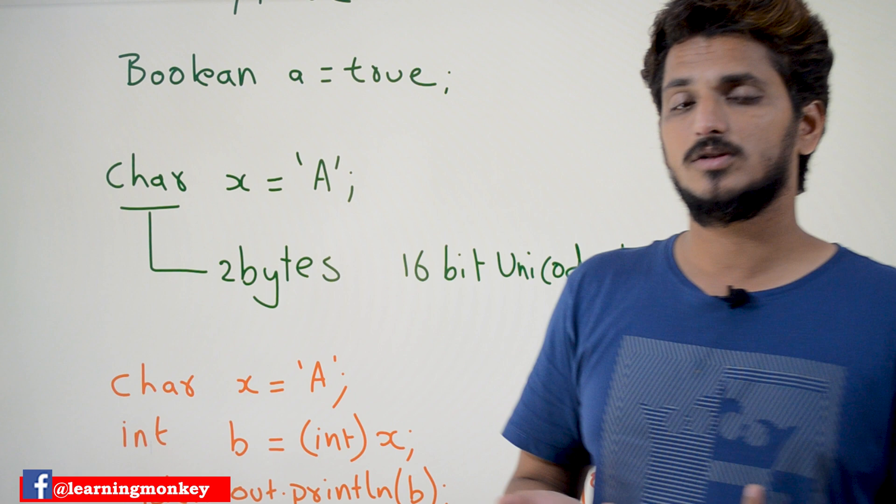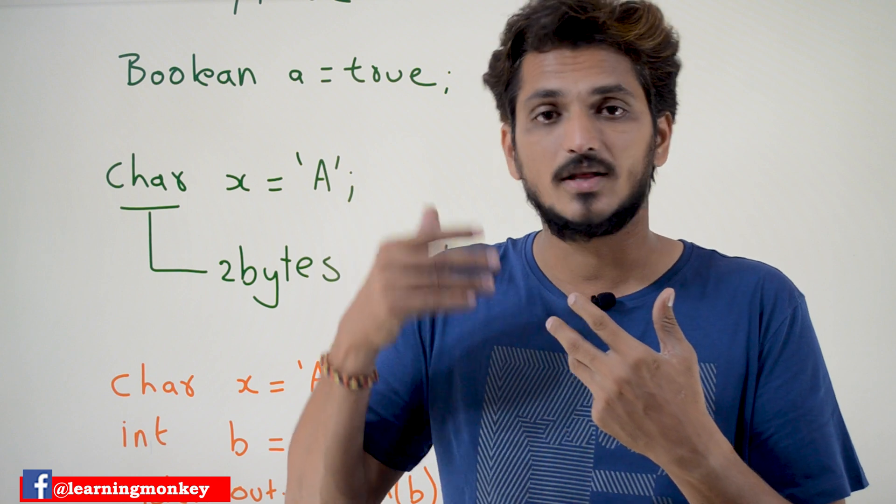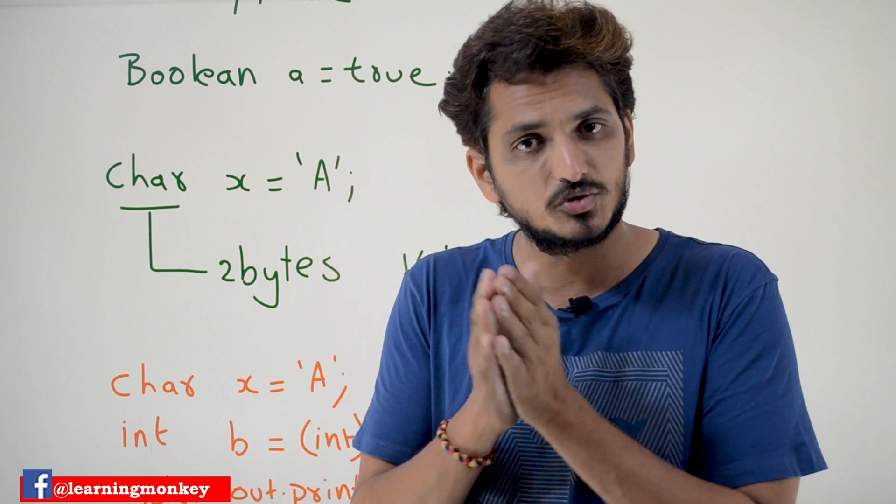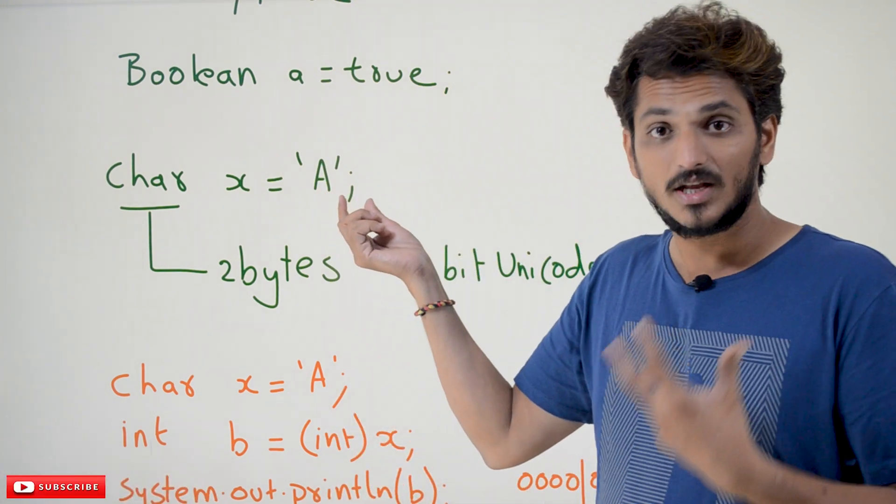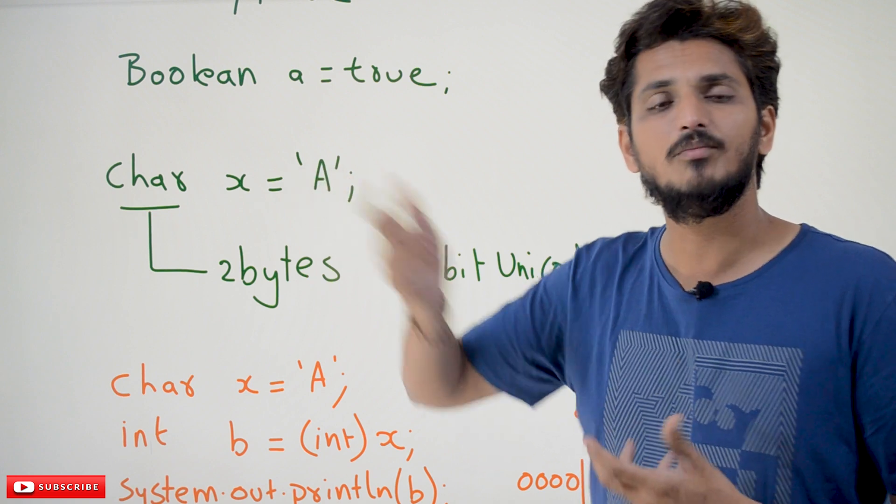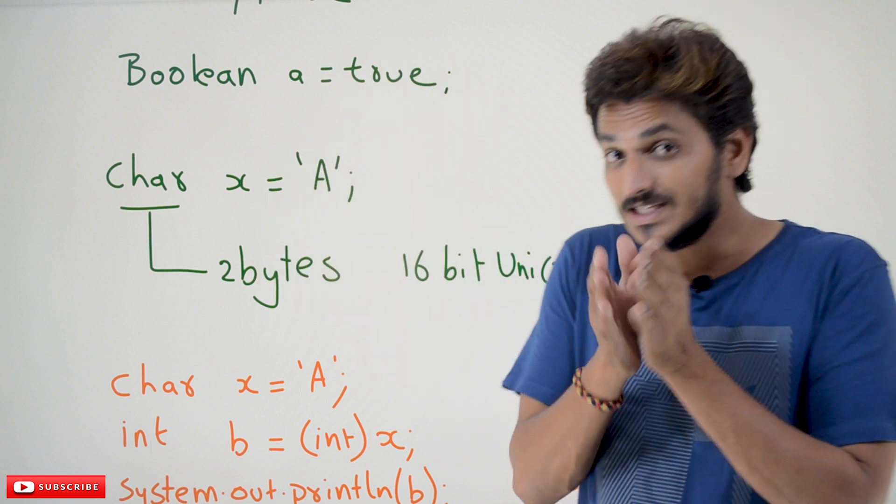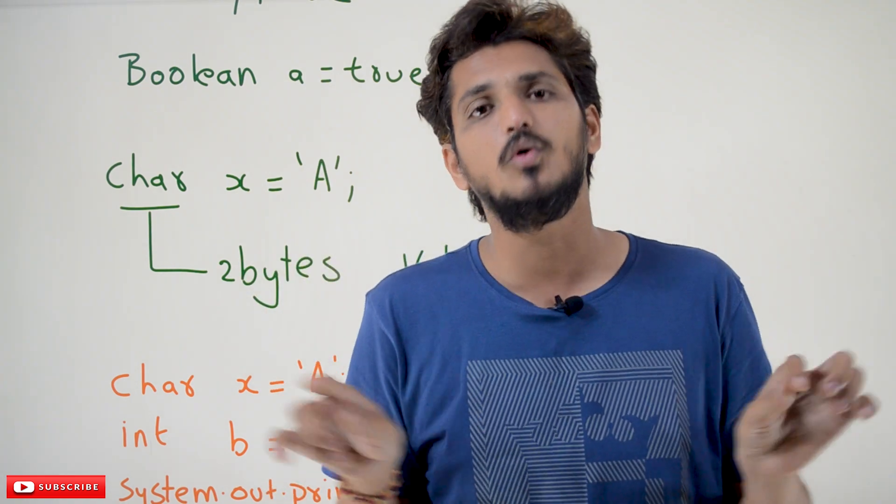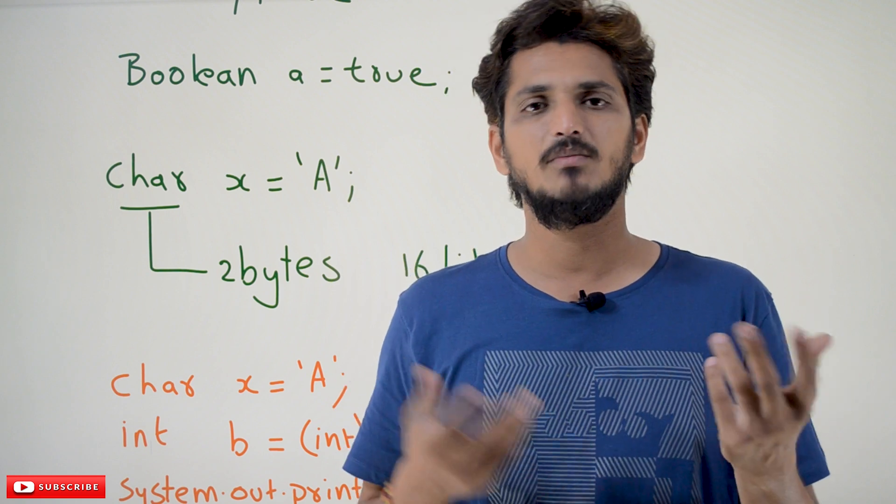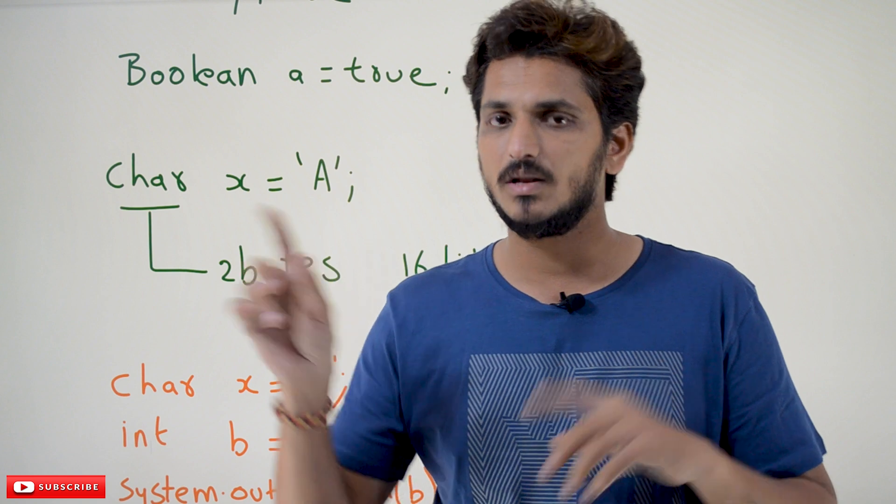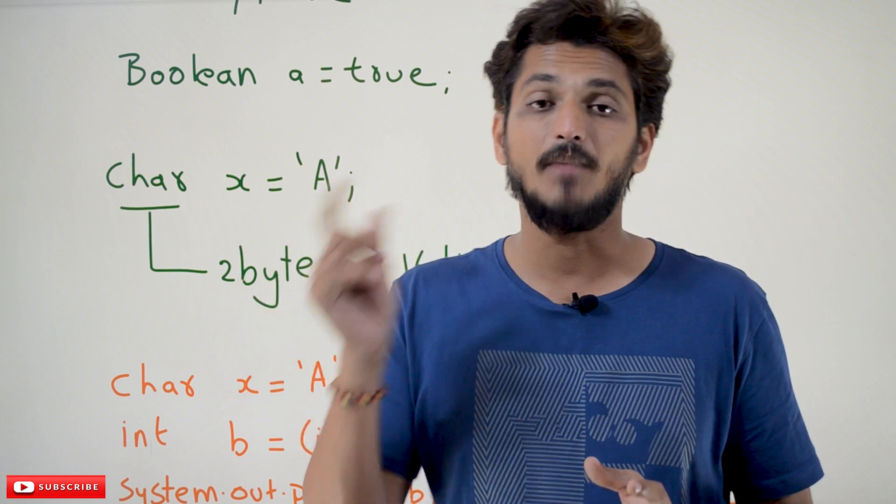But remember, in our last classes we discussed that computers cannot store decimal numbers or characters. They are able to store only digital numbers, ones and zeros. We cannot store this character A in the computer. We need to convert this into some binary value. For each and every character present on our keyboard, not only on keyboard, we are having symbols and characters like capital A, capital B, capital C, small a, small b, plus symbol, minus symbol, different symbols, Latin symbols, not only English, Latin, Greek, mathematics symbols.